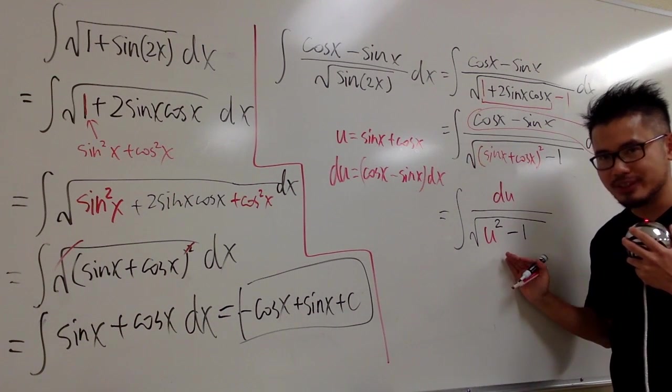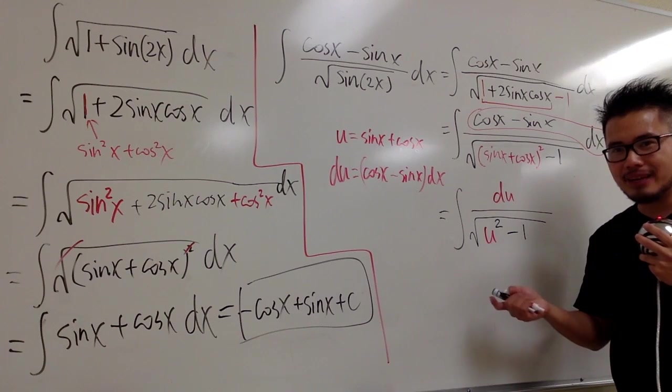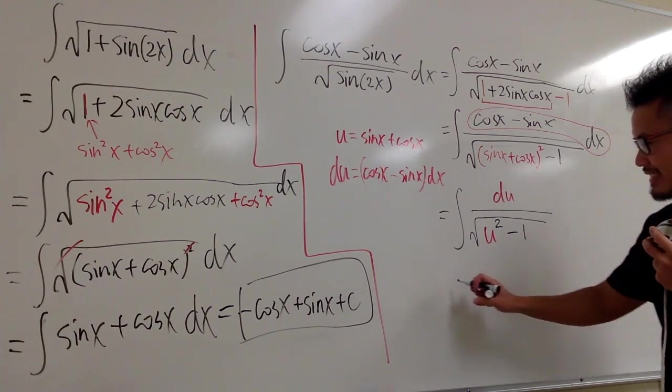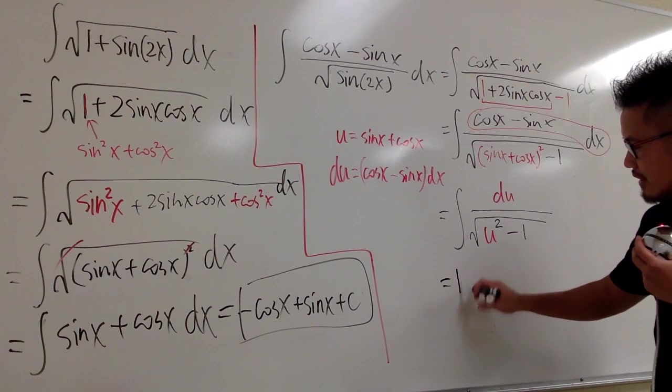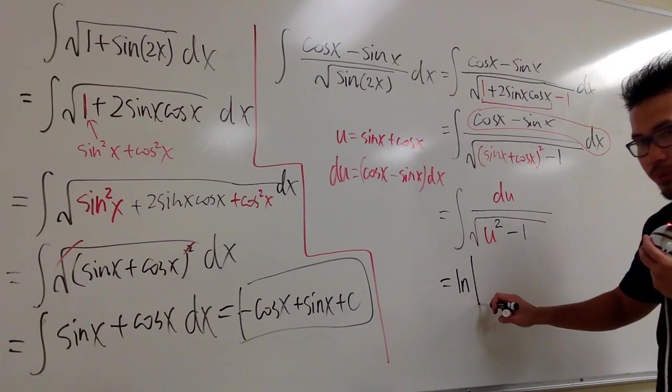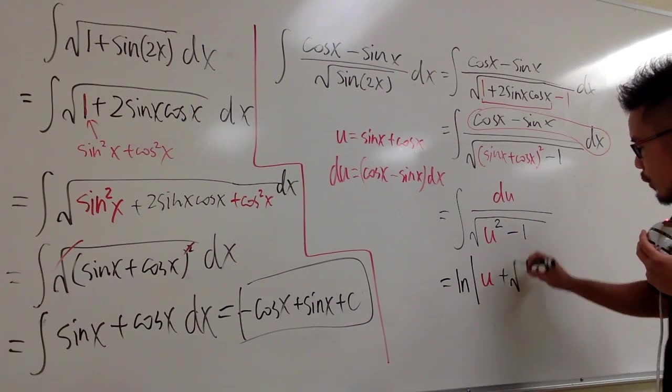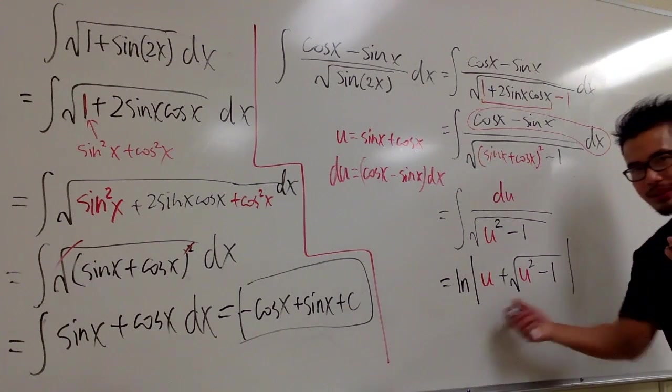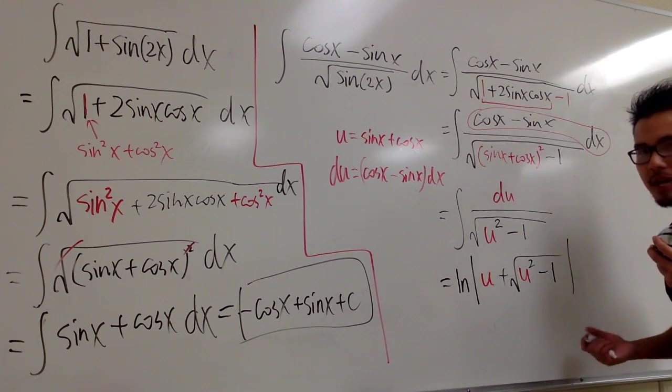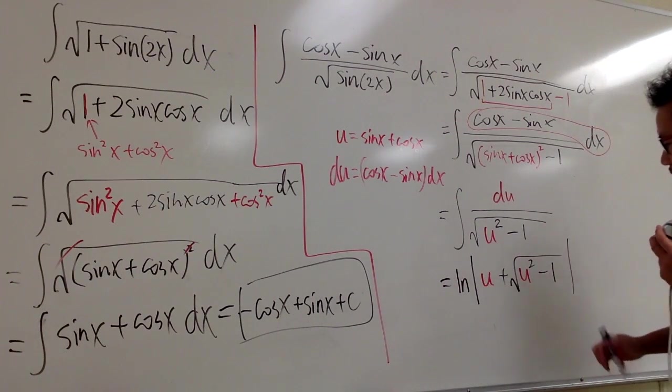And now, how can we integrate this? The answer for that is, I did it for you guys already in the previous video. So, I'm just going to write down the answer for you guys. This right here is going to give us ln, absolute value. And then, we have the u plus square root of u square minus 1. And to get this, we have to do trig sub. But there's no way for me to fit this trig sub again for you guys. So, watch the other video.